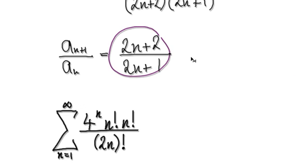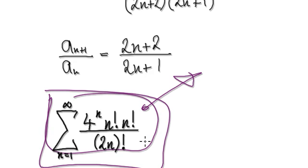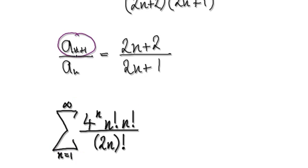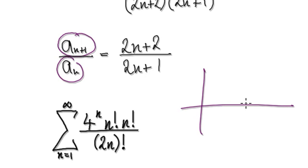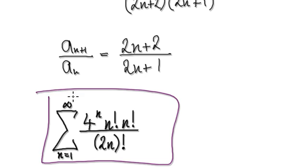Because the next term divided by the current term is bigger than 1, we can definitely conclude that this is going to diverge. With the ratio test, we can't determine if it's going to converge or diverge — it's inconclusive. But by looking at the next term divided by the current term, because we've established that it's going to climb due to this being bigger than 1, we can now definitely conclude that this will definitely diverge.